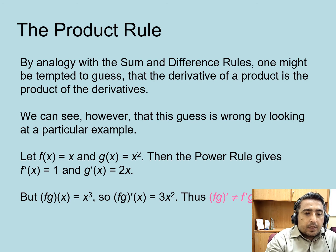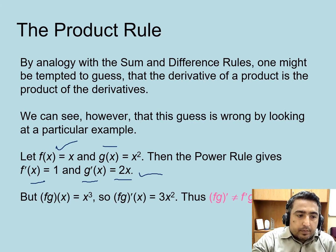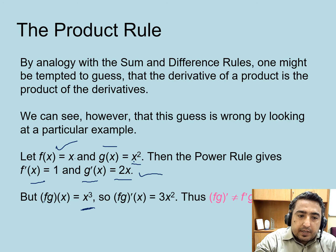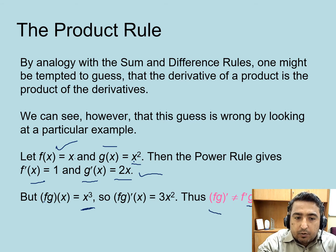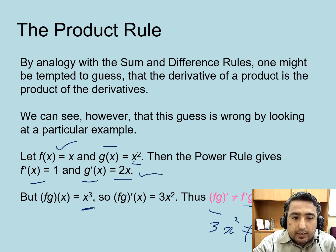Now consider these functions: f(x) = x and g(x) = x². Then f'(x) = 1 and g'(x) = 2x using the power rule. But (fg)(x) = x³, so (fg)'(x) = 3x². This is not equal to f'(x)·g'(x) = 1·2x = 2x. So 3x² ≠ 2x, demonstrating that the derivative of a product is not simply the product of the derivatives.